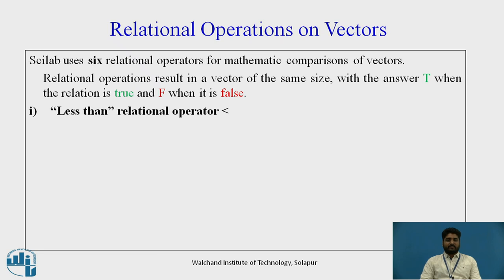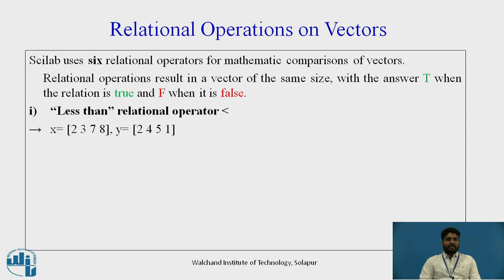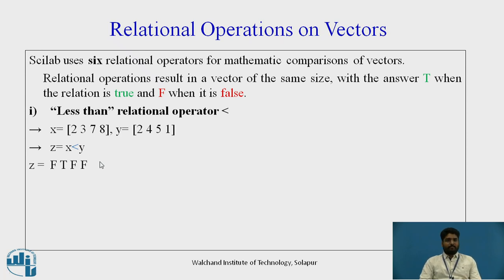The first of the 6 relational operators is less than, using the less than sign. For example, given row vectors X and Y, the relation X less than Y is denoted as X < Y, and the output will be F, T, F, F — where F is false and T is true.